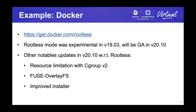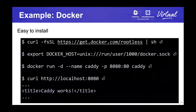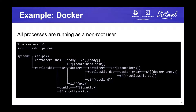Let's take a look at examples of rootless containers. Docker has been officially supporting rootless mode since version 19.03. It was experimental in 19.03, but it's going to be GA in 20.10. This new version also comes with notable updates for cgroup and FUSE-OverlayFS. Rootless Docker can be easily installed by running a script from get.docker.com/rootless, and you can run the Docker command with the DOCKER_HOST environment variable pointing to the user socket. And if you run ps commands, you can see that all processes, including containerd and dockerd, as well as containers, are running without root.